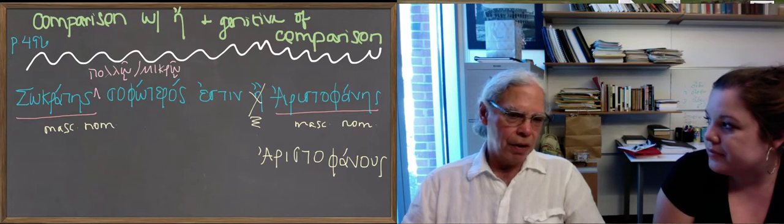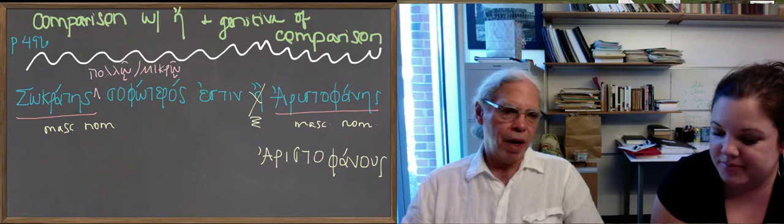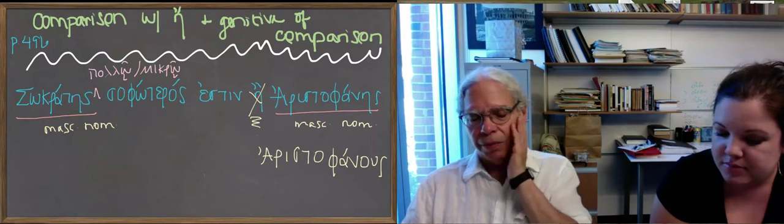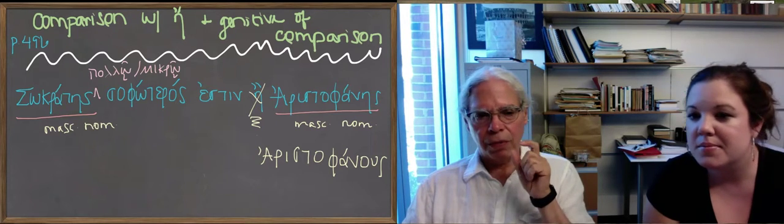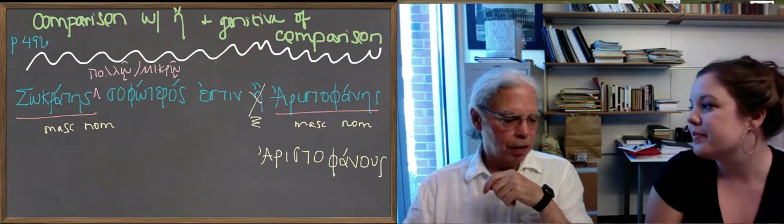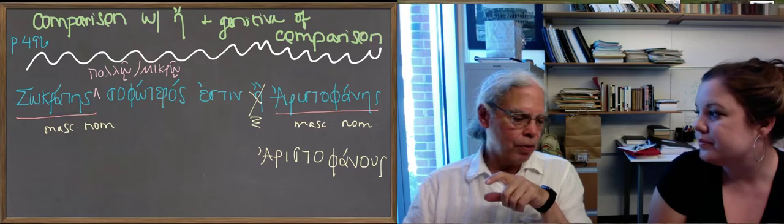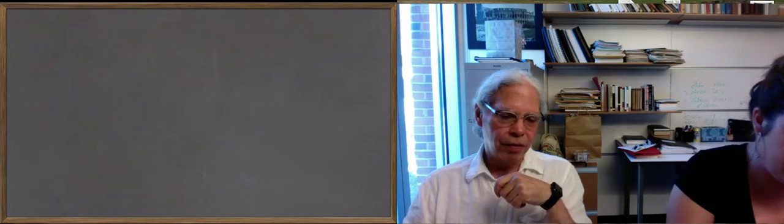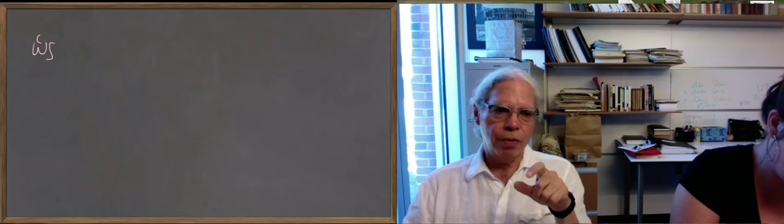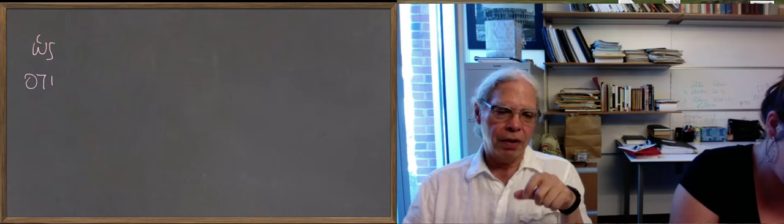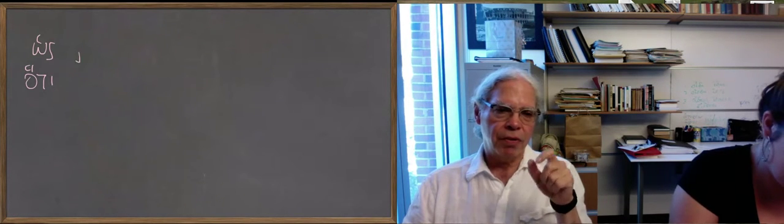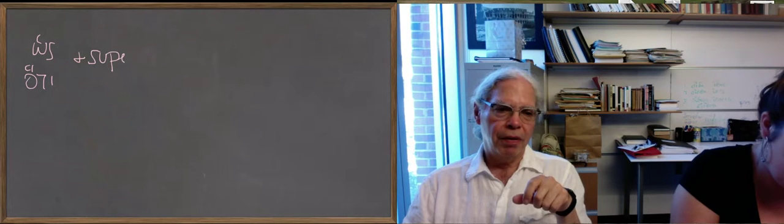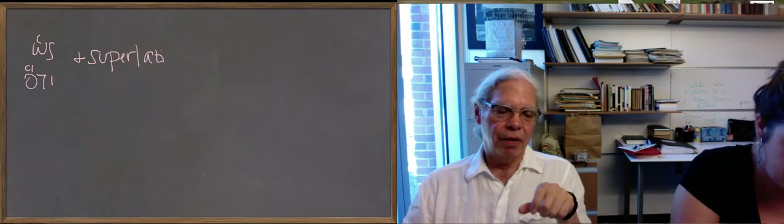Socrates is the wisest of men. But the other thing that you can do with superlatives is make them into absolutes. It's very interesting the way this works. But Greek can, in Greek you can put the adverb hos or hoti in front of the superlative adjective like best. Hos best and hoti best means as good as possible, or as bad as possible.